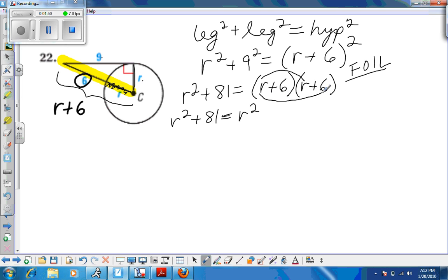Outside terms multiplied together, plus 6r. Inside terms, 6 times r, so we have another 6r. And the last terms, 6 times 6, or 36.